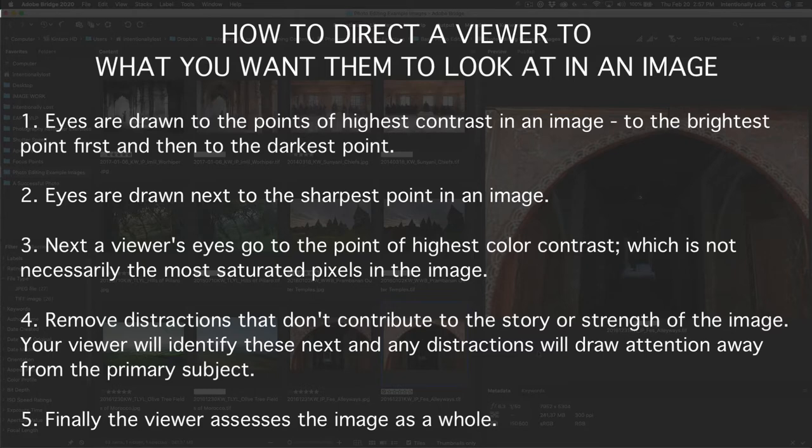And that's just your brain's way of saying, hey, this is the most important thing, I should look here. If there are blurry points in the image, your brain automatically discounts those and says, oh, maybe I'll look at that later. But right now I just want to go over here and look at the sharpest pixels — that's probably the most important information.